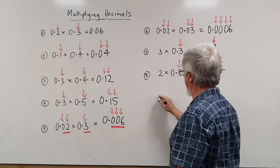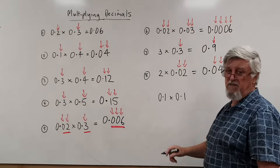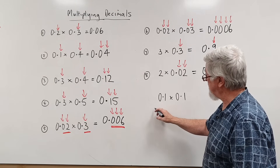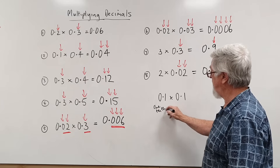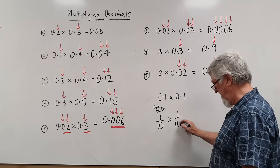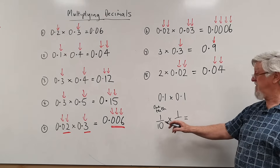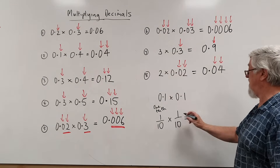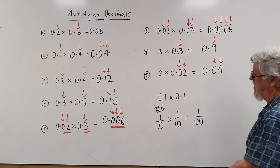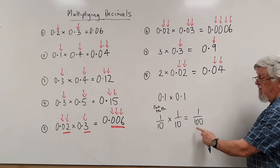Now let's look at why this works. If I have 0.1 times 0.1 — point one actually means one tenth. So we're multiplying one tenth by one tenth. When multiplying fractions, we multiply the tops and multiply the bottoms: one times one is one, and ten times ten is a hundred. So a tenth times a tenth becomes one hundredth. Ten times ten is a hundred — not twenty, that's the common trap. So 0.1 times 0.1 equals 0.01.